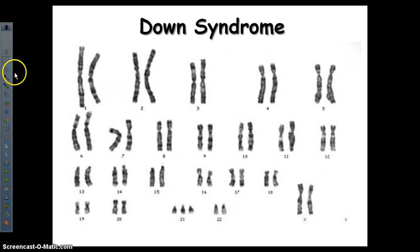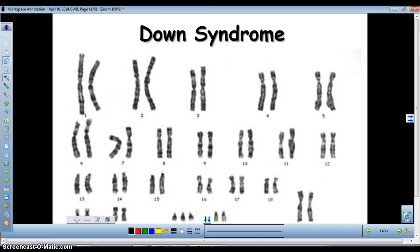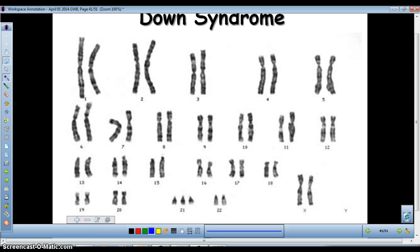Now, continuing on the path of karyotypes, let's look at this karyotype right here. Homologous pair, homologous pair, homologous pair. One copy from the mom, one copy from the dad, one copy from the mom, one copy from the dad, and so forth. Homologous pair, homologous pair.